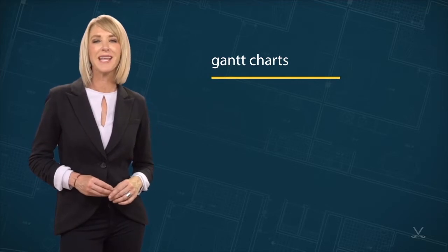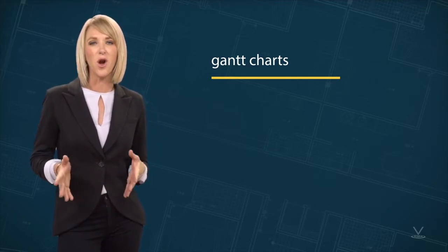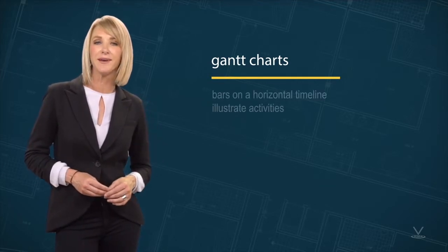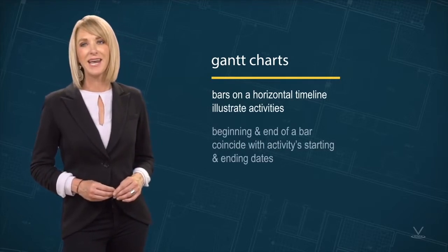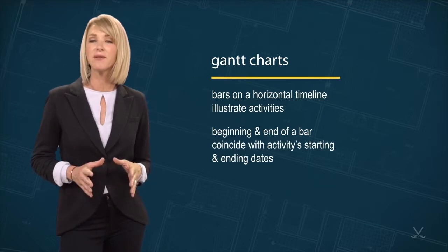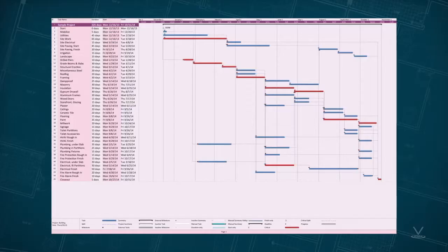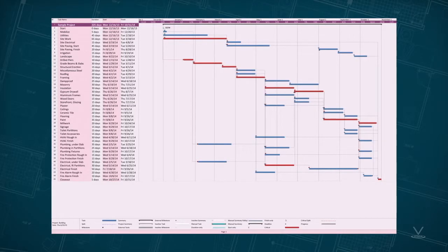Gantt charts or bar charts are often used because they are easy to read. Bars on a horizontal timeline illustrate activities. The beginning and end of a bar coincide with the activities starting and ending dates. This format highlights the time and operational concurrency aspects of the schedule and clearly illustrates how activities are to be distributed over the project timeline.